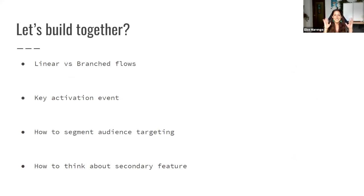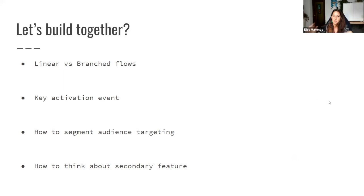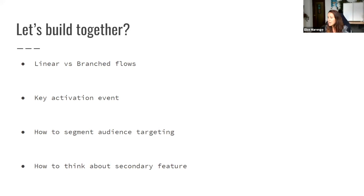It's time to build. First, we'll decide on linear or branched flow — both are easy to set up and interchangeable. Then we'll build into a key activation event through that flow, then segment and target our audience, and briefly touch on secondary features.